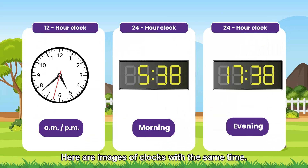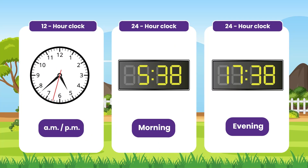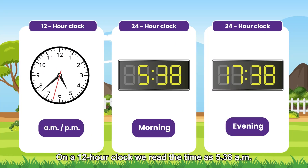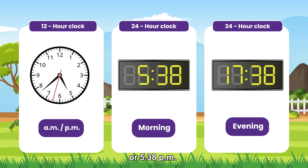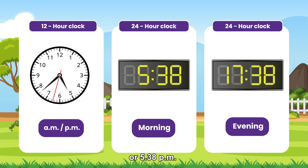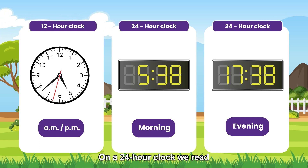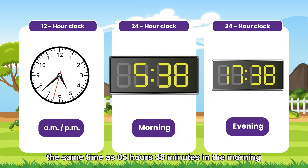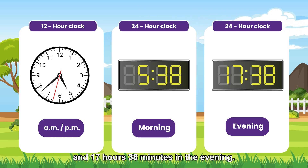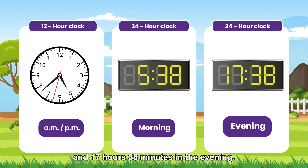Here are images of clocks with the same time. On a 12-hour clock we read the time as 5.38 a.m. or 5.38 p.m. On a 24-hour clock we read the same time as 5 hours 38 minutes in the morning and 17 hours 38 minutes in the evening.